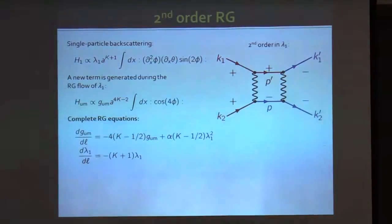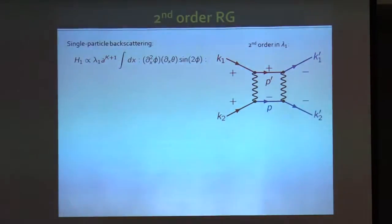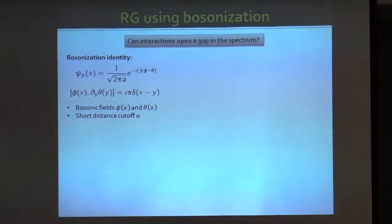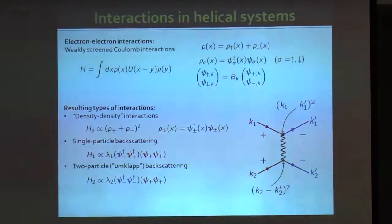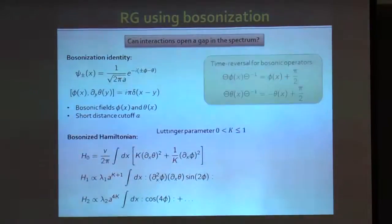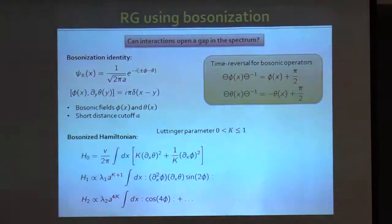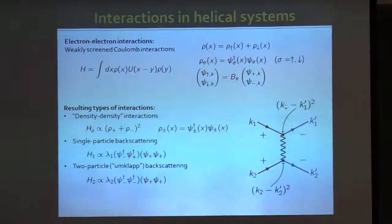We ask: what are the bound states if we replace the magnetic field by umklapp scattering — a time-reversal invariant operator? The umklapp operator preserves time reversal symmetry but breaks spin symmetry, and its gap is topologically trivial in the sense that it is adiabatically connected to the magnetic gap. We then consider a setup with a superconducting region and a Mott-insulating region gapped by umklapp scattering. There is a slight caveat: umklapp scattering requires K less than one-half, while superconductivity requires K greater than one-half. However, the superconductor can screen interactions, so if the bare K is near one-half, superconductivity can bring it slightly above one-half.